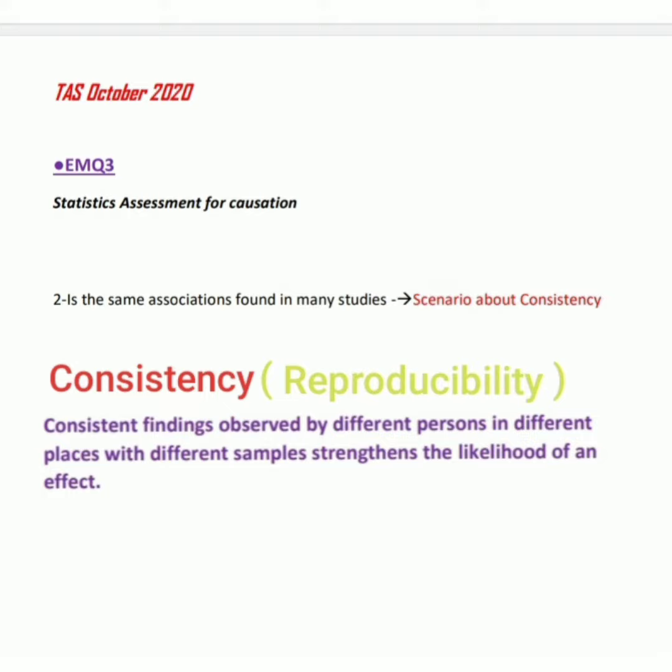The answer is consistency. What is the definition of consistency or reproducibility? Consistent findings observed by different persons in different places with different samples strengthens the likelihood of an effect.